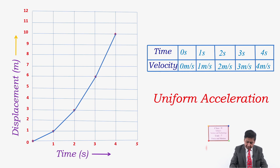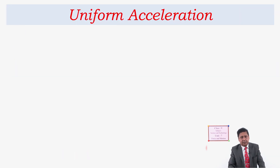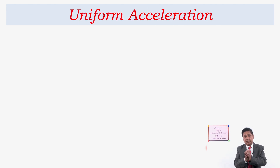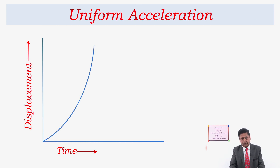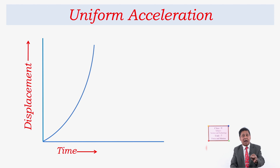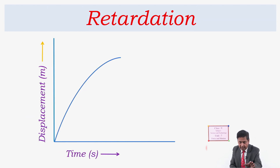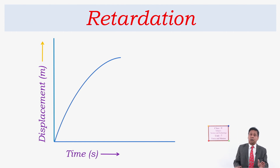If you have to show uniform acceleration by a graph without any specific values, it appears as an upward-curving parabola. If you have to show retardation, the displacement-time graph appears differently — the curve bends the other way. We are continuously representing different types of motion using the displacement-time graph.